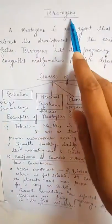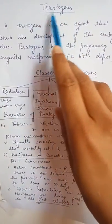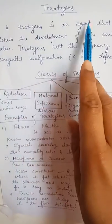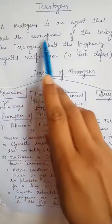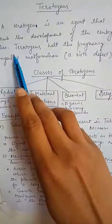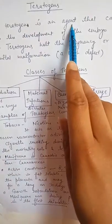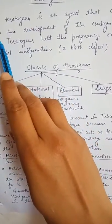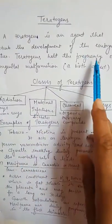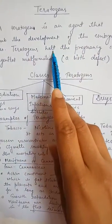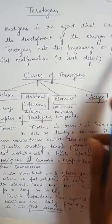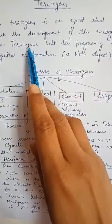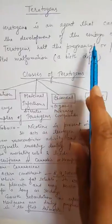Hello everyone. I am going to discuss the topic of teratogens. First of all, what are teratogens? A teratogen is an agent that can disturb the development of the embryo or fetus. Teratogens can halt the pregnancy — they can stop pregnancy or sometimes produce congenital malformation or birth defects.